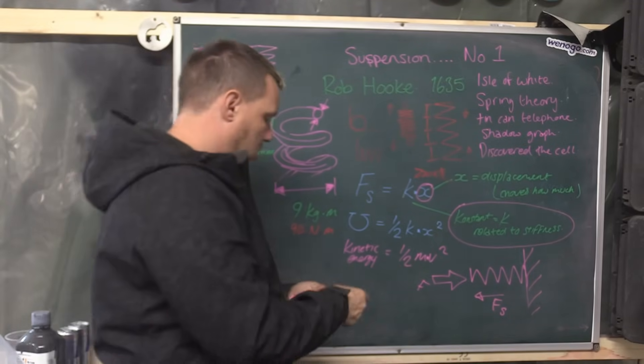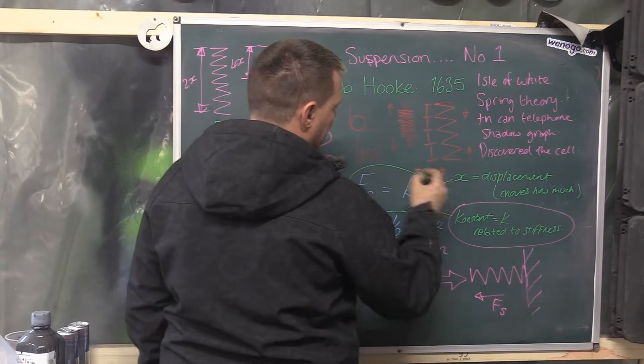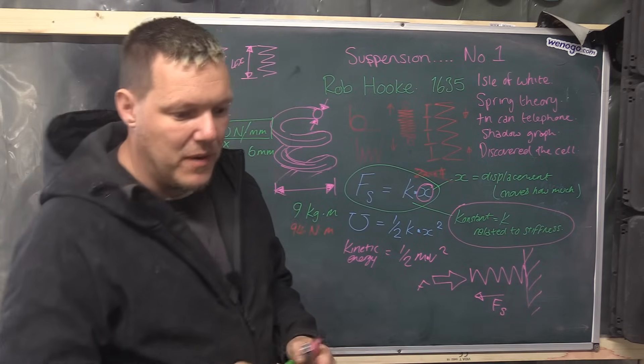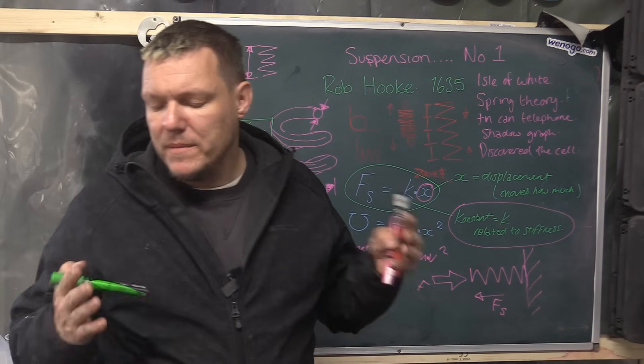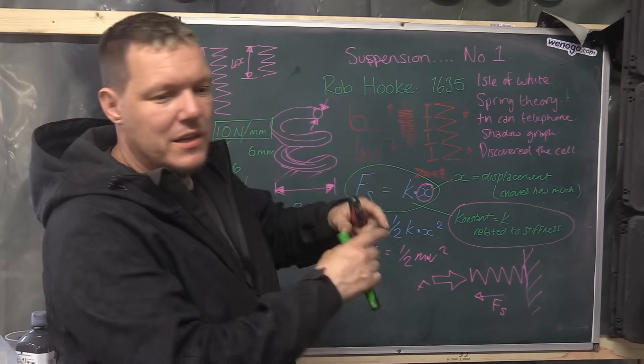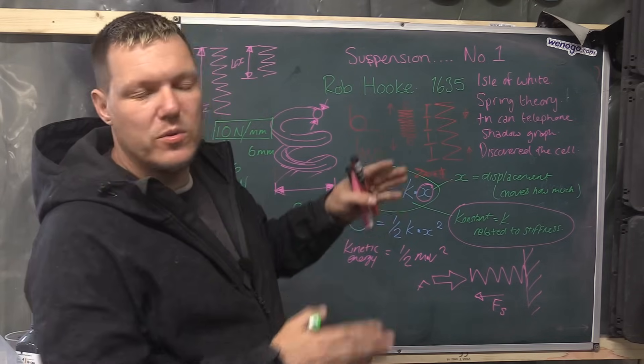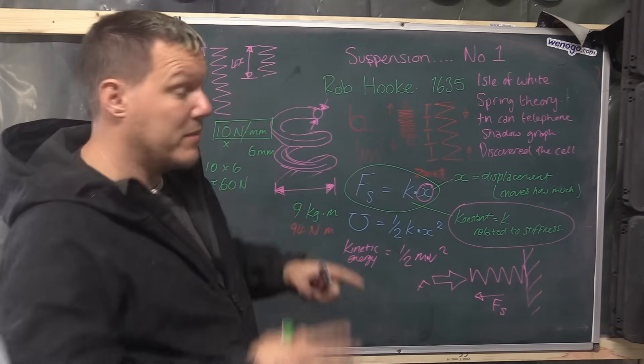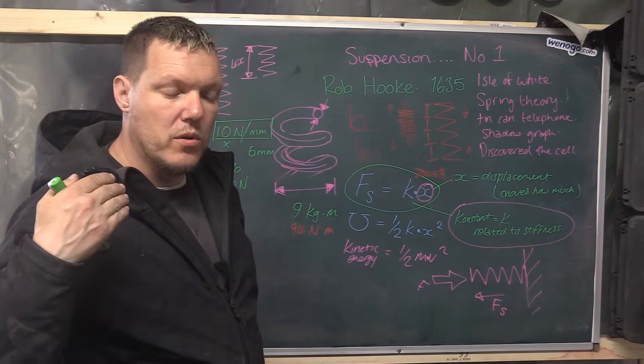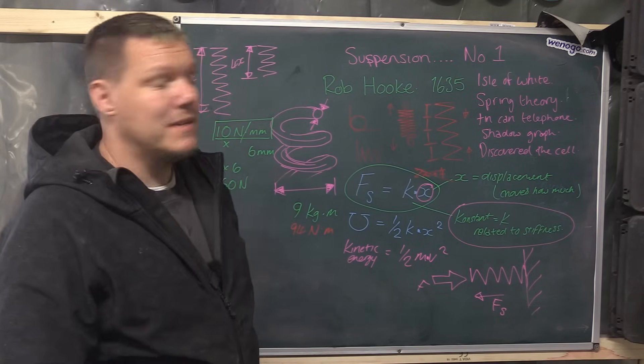But basically, what Hooke's Law is telling us, what this is telling us, is just that if you have what you'd call a standard spring, if you have a standard spring where it has the same pitch, the wire length is the same, the wire diameter is the same. So in other words, the stiffness, the stiffness stays the same throughout the system of the spring, then your spring rate will be constant. It's basically that simple.